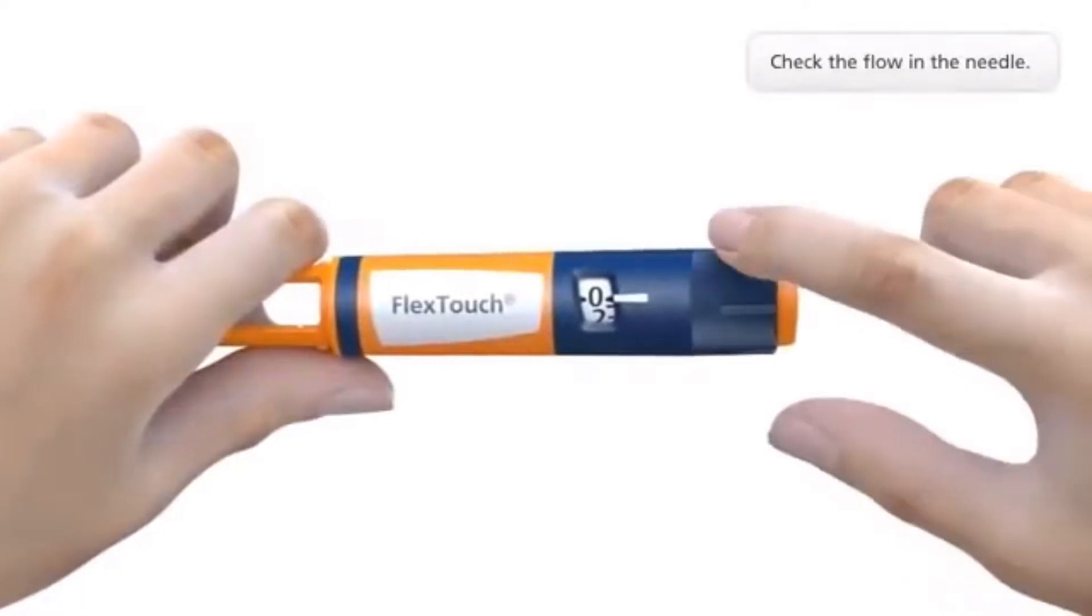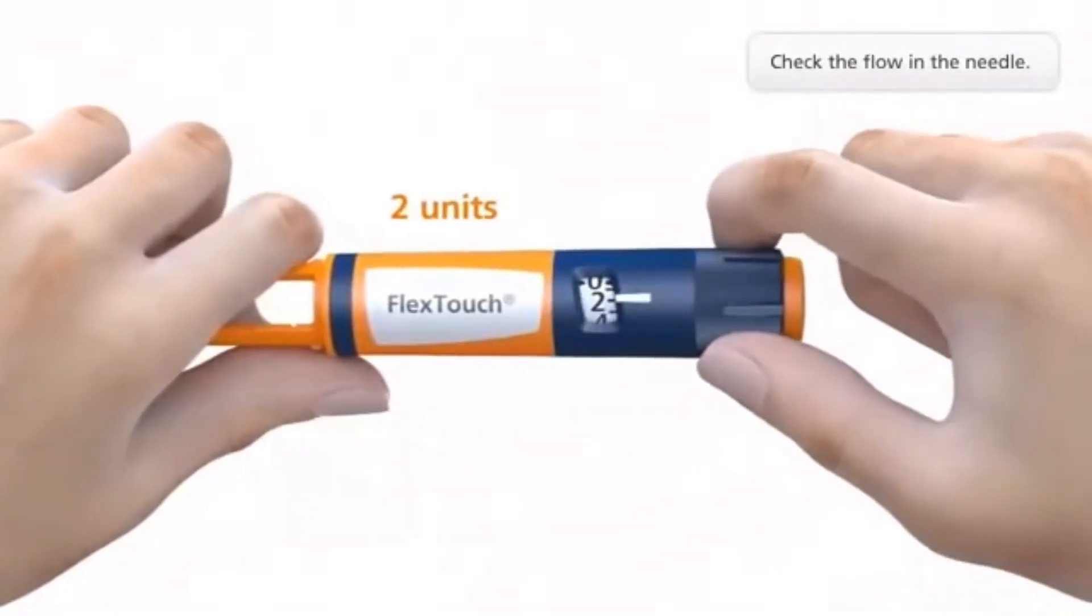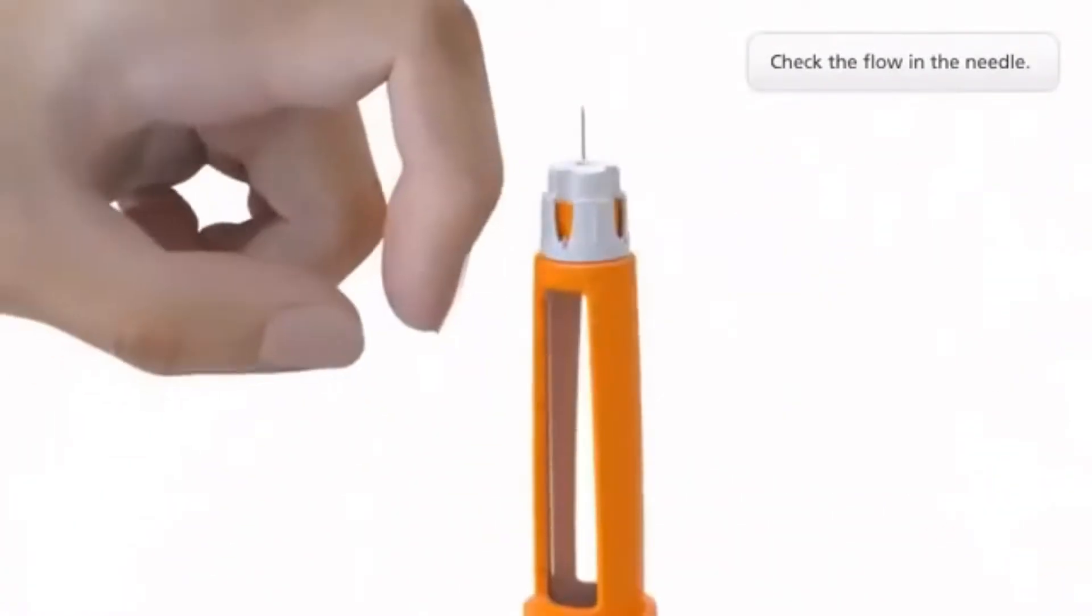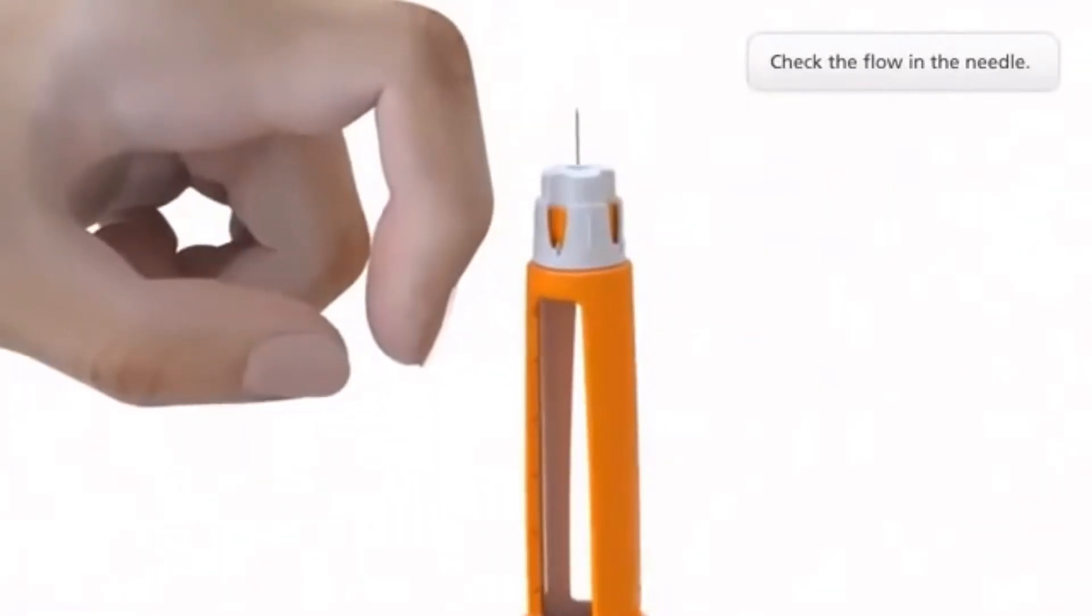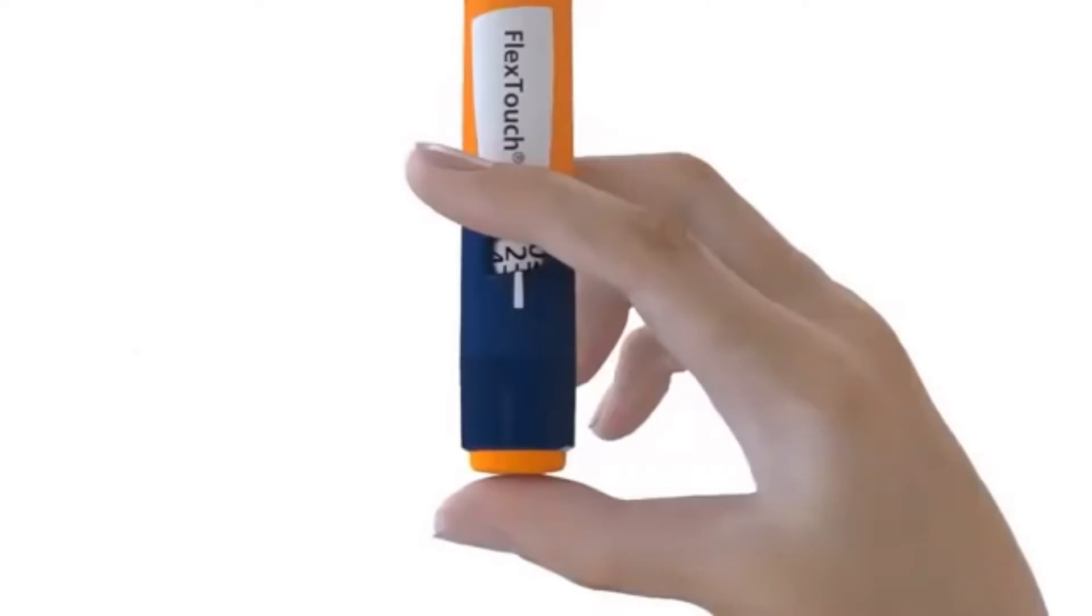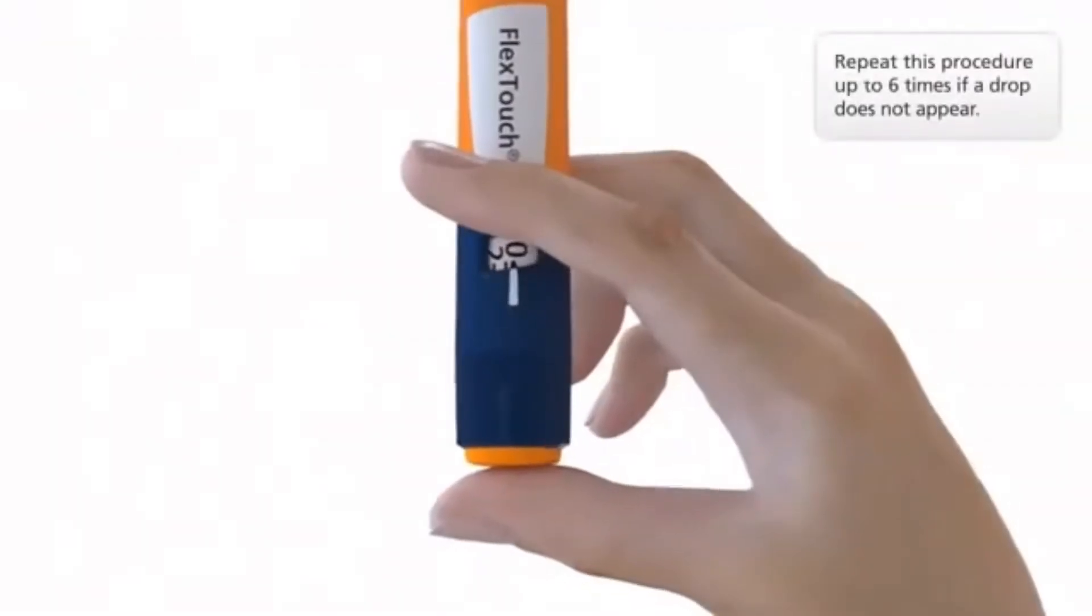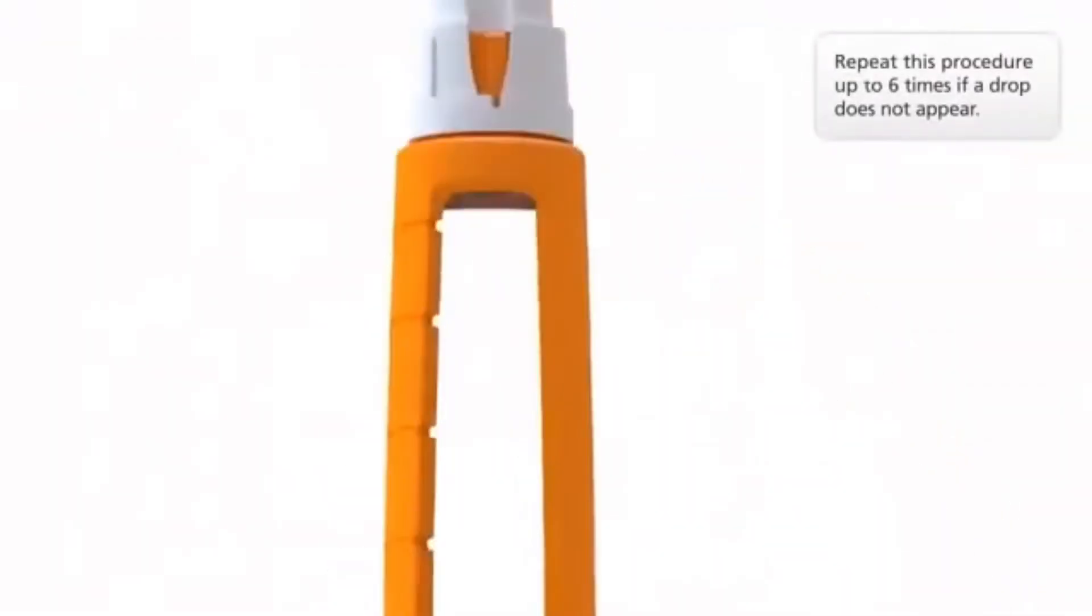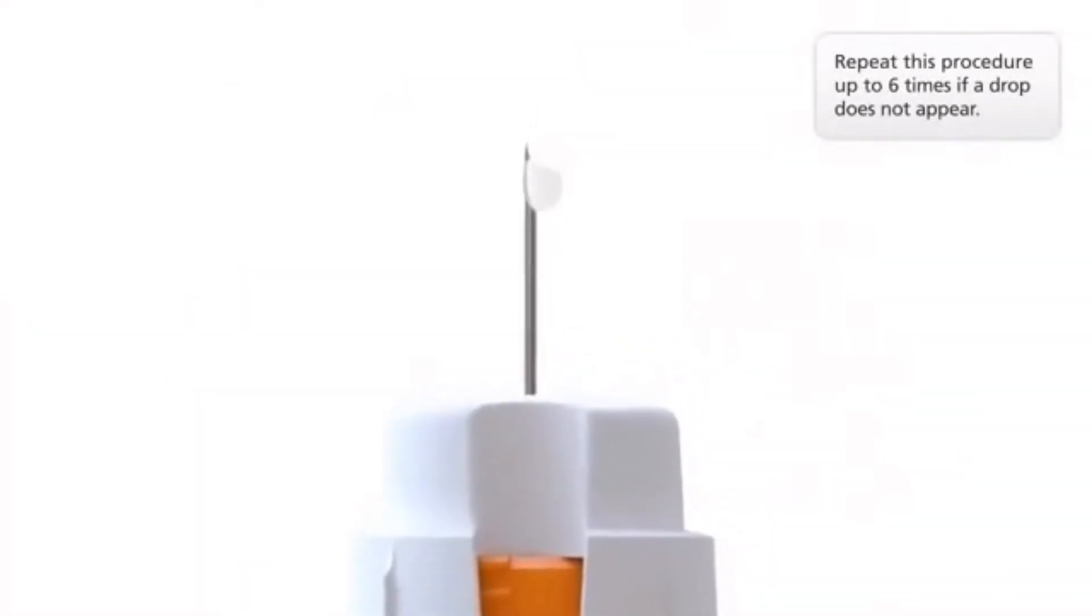Check the flow in the needle with an air shot of two units. Tap the pen gently a few times to make any air bubbles collect at the top. Press the push button until the display returns to zero and make sure that a drop appears.